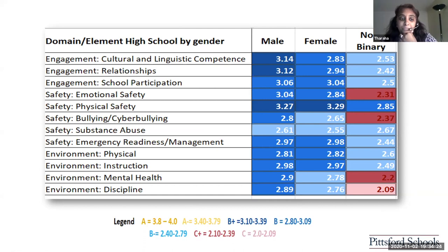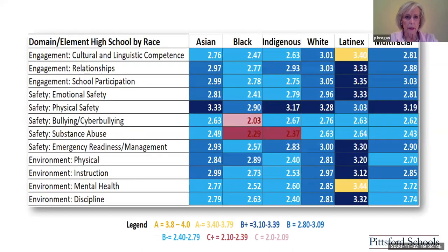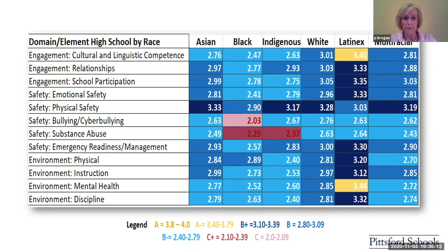If you have questions, post them in the chat and at the end we can go through all the questions and come back to a particular slide. Some things to notice: we all look first to the red and pink, so we see some things related to emotional safety, bullying, mental health, and discipline. This is high school — combined high schools. We also looked at the domain and elements related to race. Along the left side are all the same domains and elements listed; the right side shows the various components of our student population.